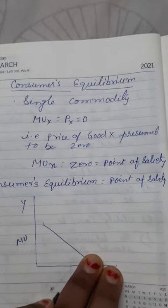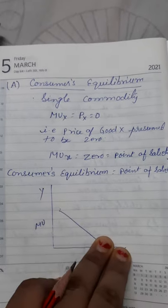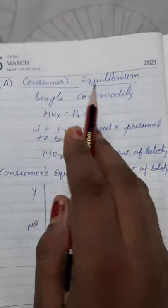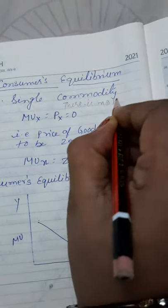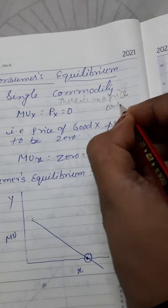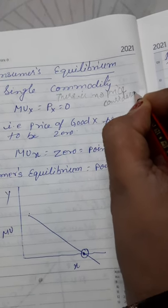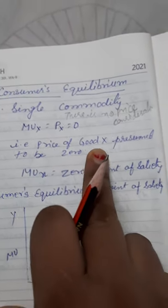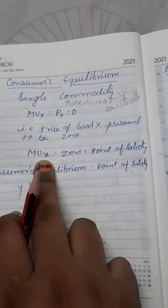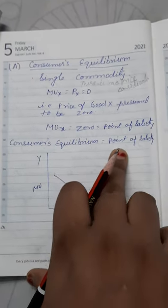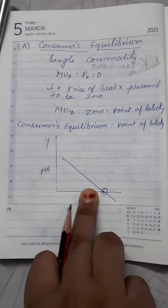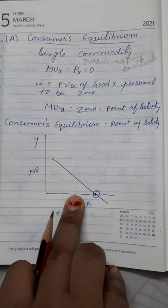Now we are discussing about the consumer's equilibrium. We have done with the assumptions. Now the condition is that when commodity is single and there is no price consideration, the price of goods is presumed to be zero. The condition is when marginal utility of good x is zero, that is point of satiety. And the consumer's equilibrium is point of satiety.